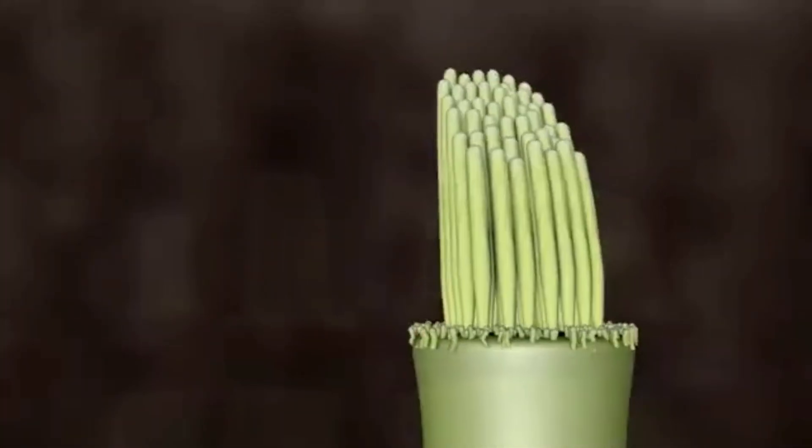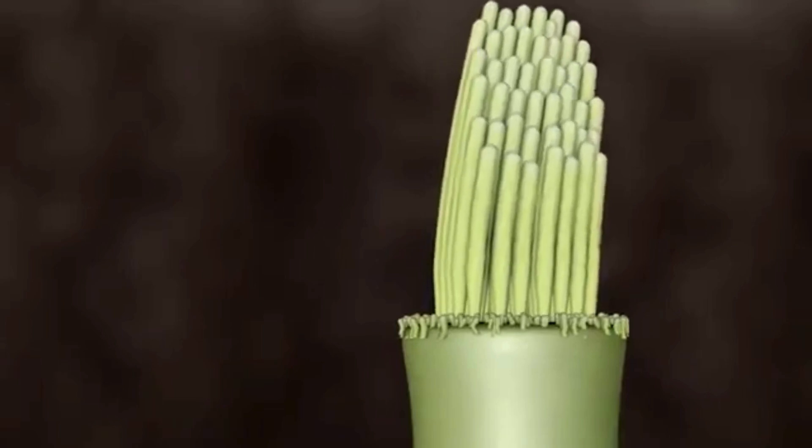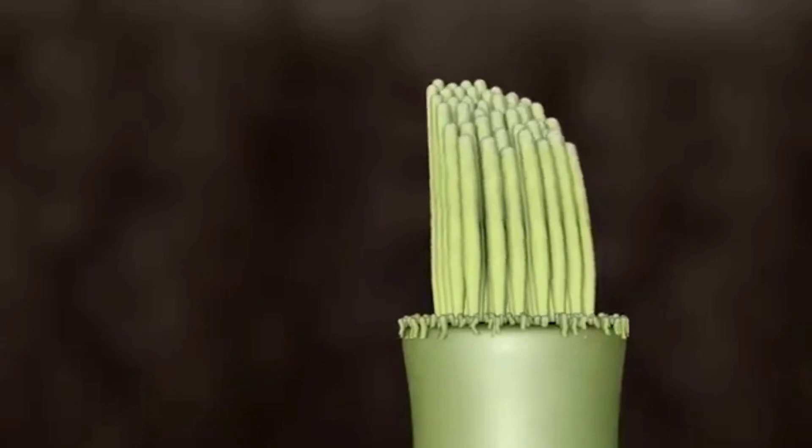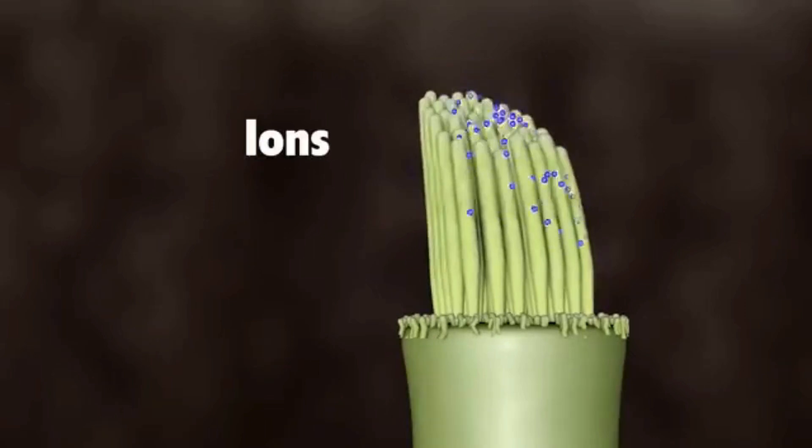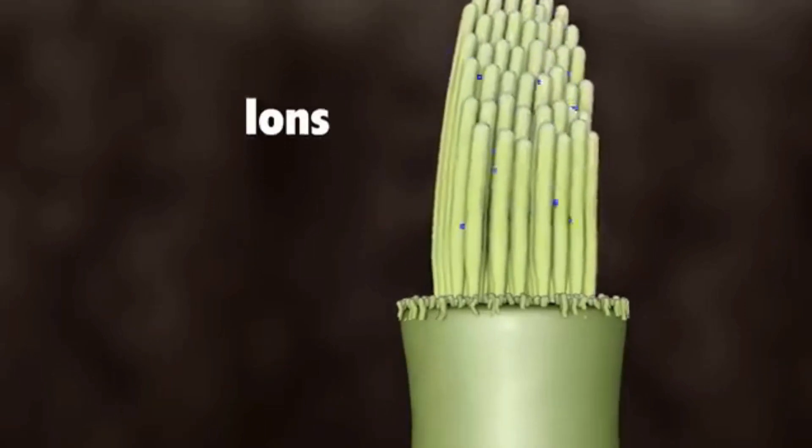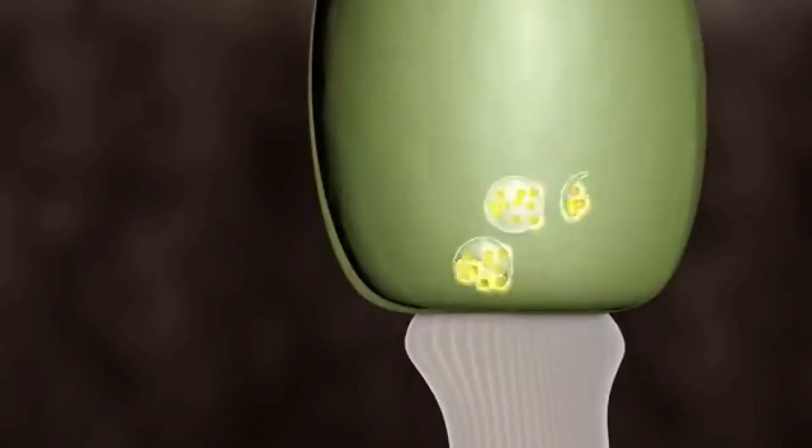The hair bundle on top of the hair cell turns these movements into electrical signals. As the hair bundles are moved, ions rush into the top of the hair cells, causing the release of chemicals at the bottom of the hair cells.